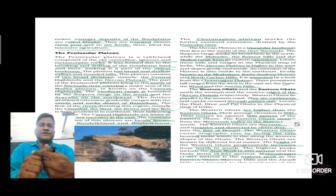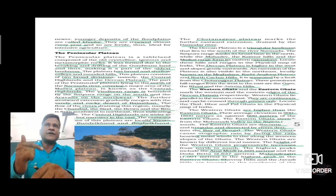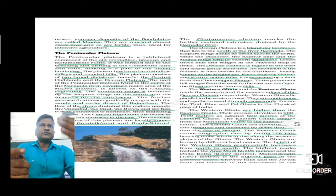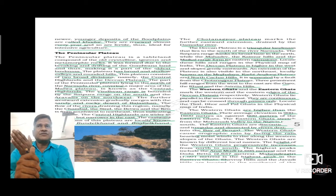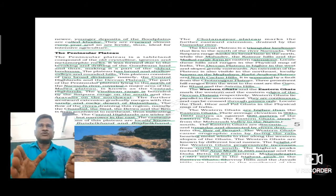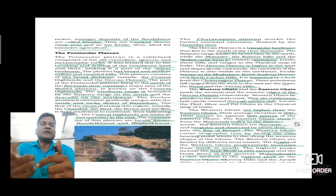The part of the Peninsular Plateau lying to the north of the Narmada River, up to the Malwa Plateau, is completely called the Central Highlands. The Central Highlands are wider in the west direction and narrower in the east direction. The eastward extensions of this plateau are locally famous as Bundelkhand and Bagelkhand. The Chota Nagpur Plateau marks the further eastward extension, which is drained by the famous river Damodar.